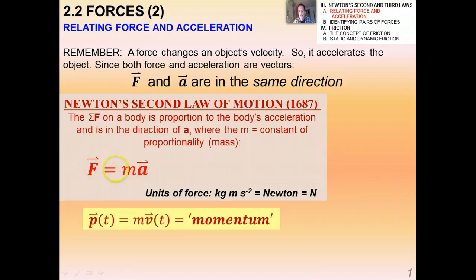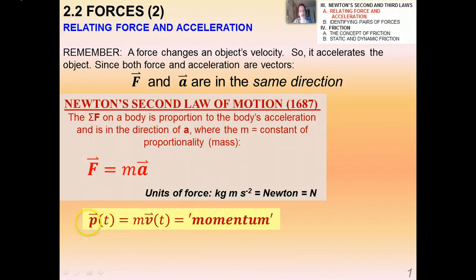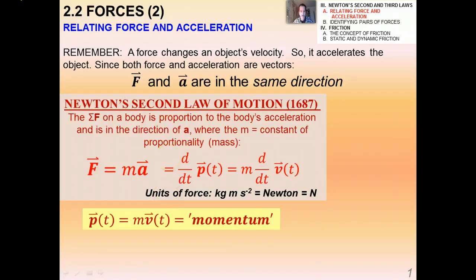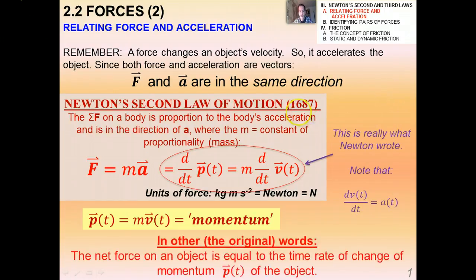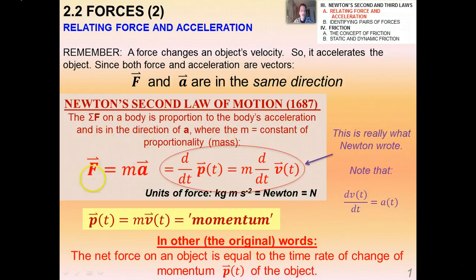Newton actually never said F = ma. He said that force is the time rate of change of momentum. Momentum is the quantity p(t), a vector equal to the product of mass and velocity. What Newton really said was that F equals d/dt of p(t). Assuming constant mass, you factor m out and get m·dv/dt, and since dv/dt is acceleration, you arrive at F = ma. The net force on an object equals the time rate of change of momentum — a very important distinction.